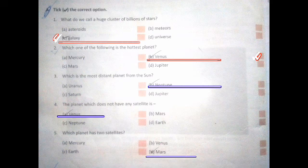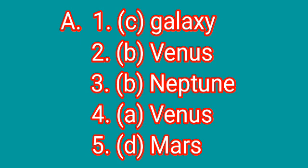Question four: Which planet does not have any satellite? The answer is Venus. Question five: Which planet has two satellites? The answer is Mars. Repeat the answers: one — Galaxy, two — Venus, three — Neptune, four — Venus, five — Mars.